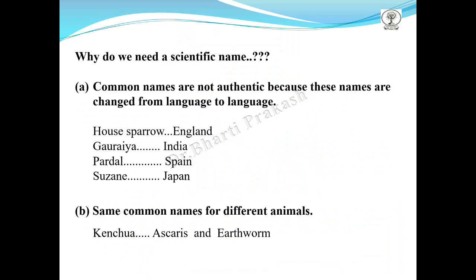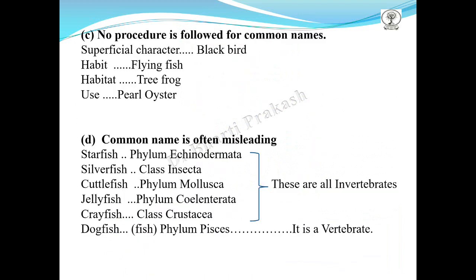Similarly, some common names refer to different animals. For example, Kenchua — both Ascaris and Earthworm are known by this common name. There is also no standard procedure followed for common names. For example, we may use a superficial character for naming, like the blackbird being called so because it is black, or a habit of the animal, such as flying fish.